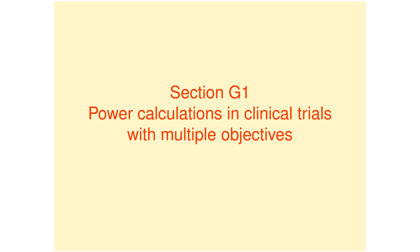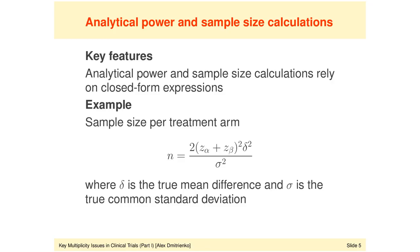Section G1: Power calculations in clinical trials with multiple objectives. We will begin with a traditional analytical approach to power and sample size calculations. Standard sample size calculations are based on analytical solutions or closed-form expressions, and generally you expect to have a formula to compute the number of patients or events in a trial with a time-to-event outcome. The formula shown on this slide is a standard formula used in trials with a normally distributed endpoint.